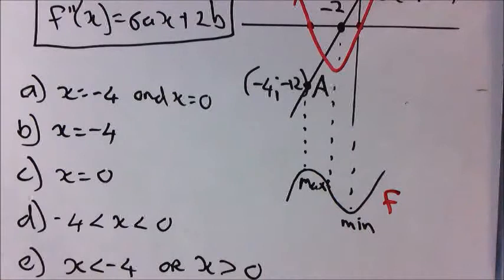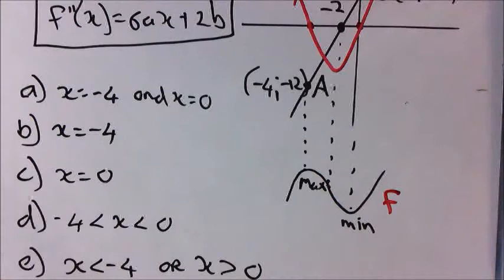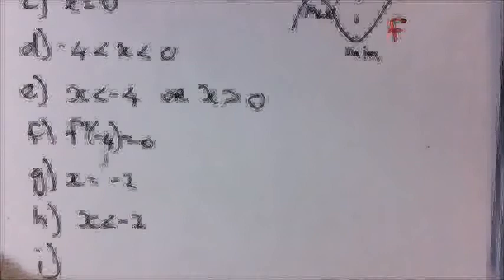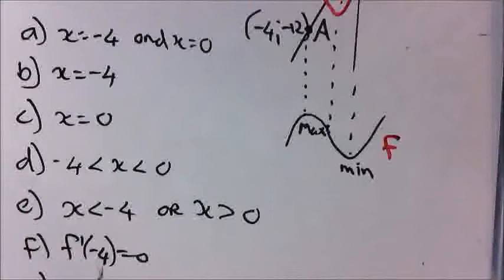Part I: x for which the graph is concave upwards. It's to the right of the point of inflection, so x > -2. And this completes question 11 for exercise 12. I hope this will help you in understanding the work.